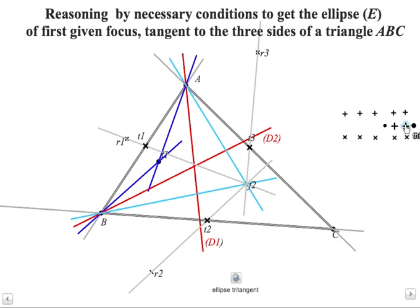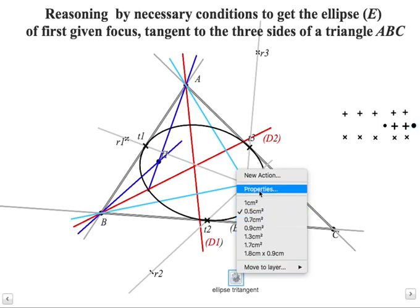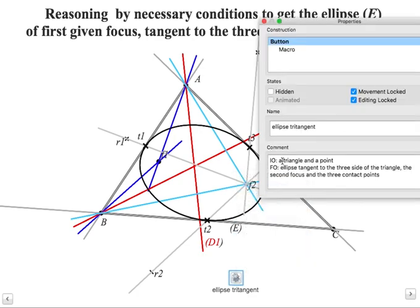So to construct our ellipse, we need the two foci and one of these three points and we get the ellipse. And we can record this construction in this macro construction where you can see that the initial object is a triangle and a point. And we obtain this ellipse, the second focus F2, and the three contact points.